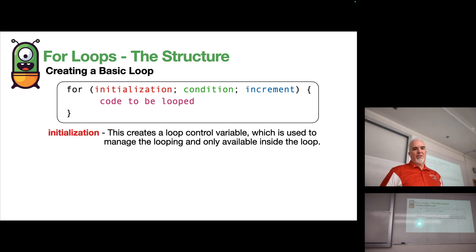The initialization creates a loop control variable, which is used to control the loop. That variable is available for use inside the loop, but not outside the loop.